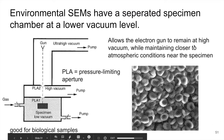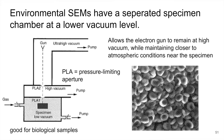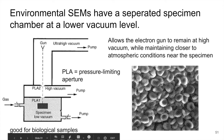The other approach is to not remove the water from the sample at all, but instead to image samples such as biologicals in their native state. This requires lower vacuum levels, and this is the Environmental SEM, or E-SEM. It's really good for biological samples.